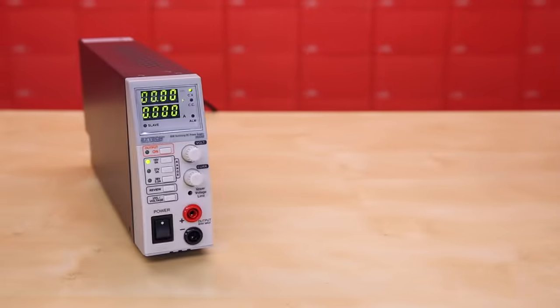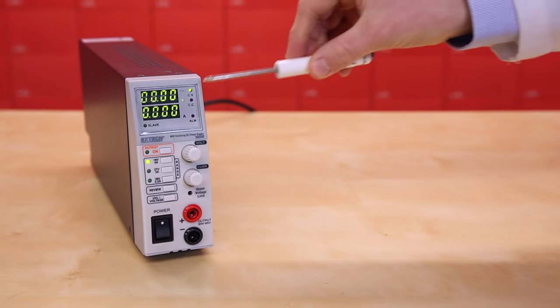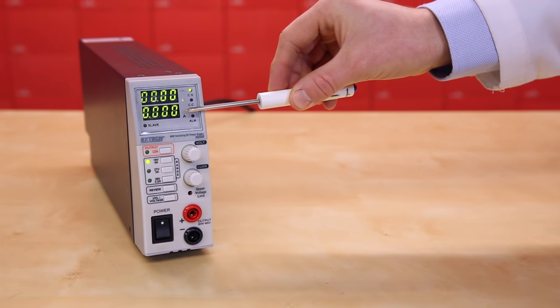Most bench power supplies are similar in appearance and have similar controls. Most will have a grounded metal case and a place to plug in an AC power cord. On the front, you'll likely see two displays, one for voltage and the other for current.